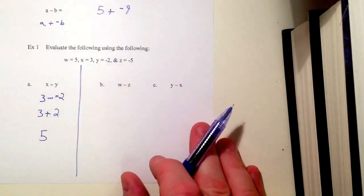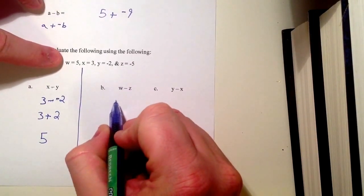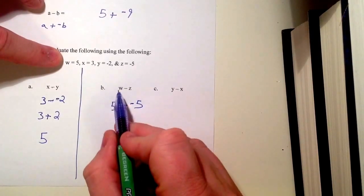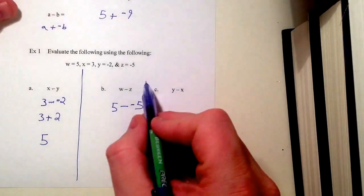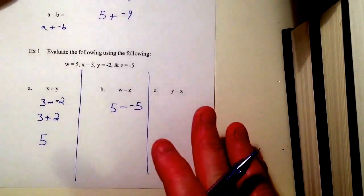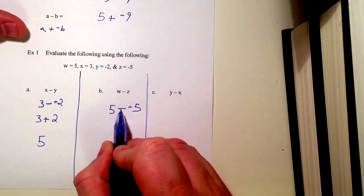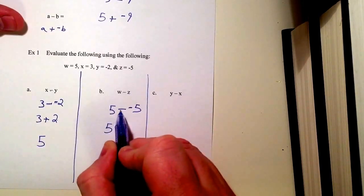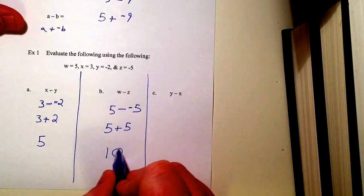You may not be done, but let's go through it. For W minus Z: W is 5, so we put 5, minus Z, which is negative 5 — giving us 5 minus negative 5. Now, if you're not paying attention, you might want to say 0 because you see 5, a minus, and a 5. But remember: anytime you see a minus negative right next to each other, they become a plus. So 5 stays the same, minus becomes plus, negative 5 becomes its opposite — positive 5. That gives us 5 plus 5, which is 10.